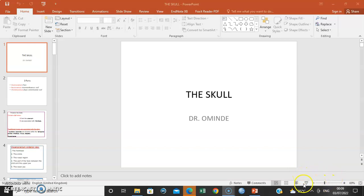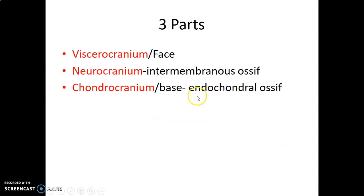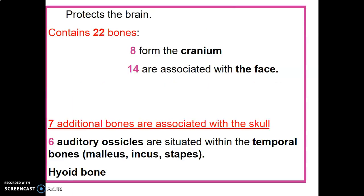The skull has three parts: the viscerocranium where the face is located, the neurocranium which is on top, and the chondrocranium that forms the base of the skull. The neurocranium forms by intramembranous ossification, while the chondrocranium forms by endochondral ossification. Intramembranous ossification is whereby bone forms directly from mesenchymal cells, while endochondral ossification forms bone from a pre-existing hyaline cartilage.